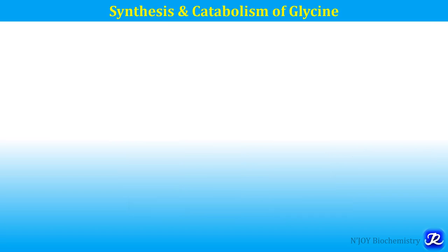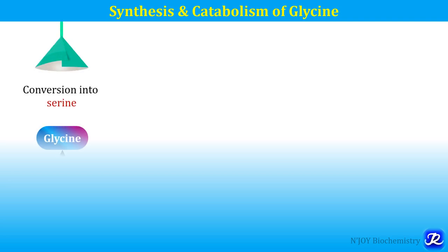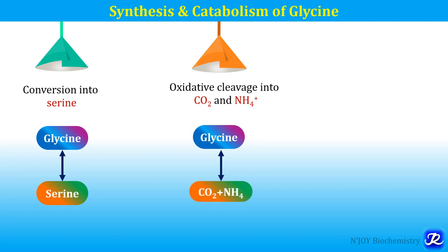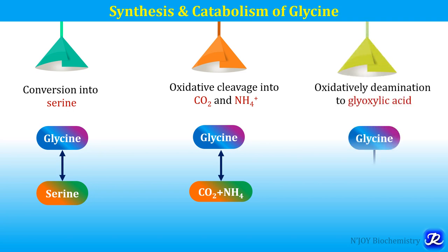Synthesis and catabolism of glycine involves three important reactions. The first is interconversion with serine — this is a reversible reaction. The second reaction is oxidative cleavage of glycine into carbon dioxide and ammonia, which is also reversible. Third is oxidative deamination of glycine to glyoxylic acid — glycine is degraded to glyoxylate and can also be synthesized from glyoxylate. These are the three major metabolic reactions involved in synthesis and catabolism of glycine.